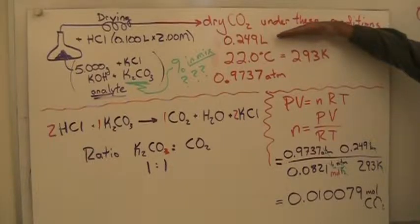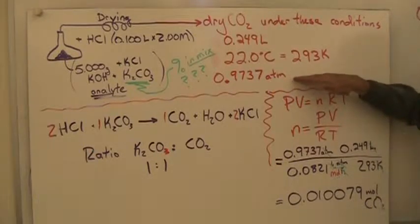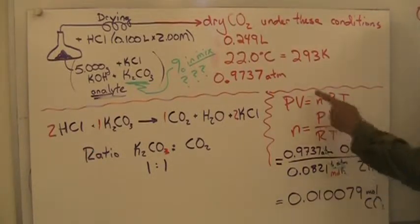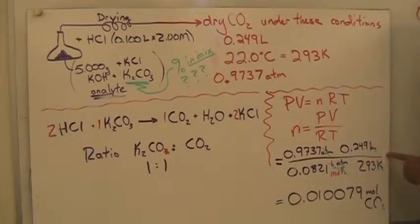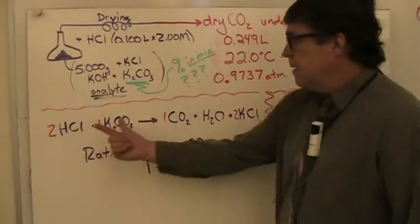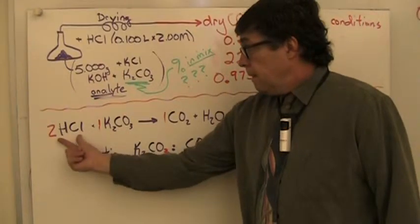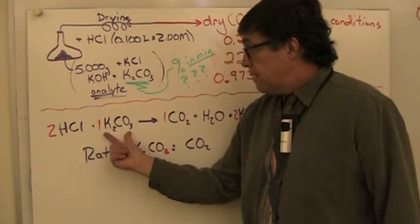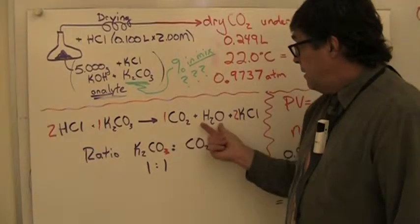We get 249 milliliters at 293 kelvin and a pressure of 0.9737 atm. Using PV equals NRT, we can solve by substituting in those numbers to get 0.010079 moles of CO2. This is the reaction that occurred: the hydrochloric acid combined with potassium carbonate in a ratio of 2 to 1 and released carbon dioxide, water, and potassium chloride.